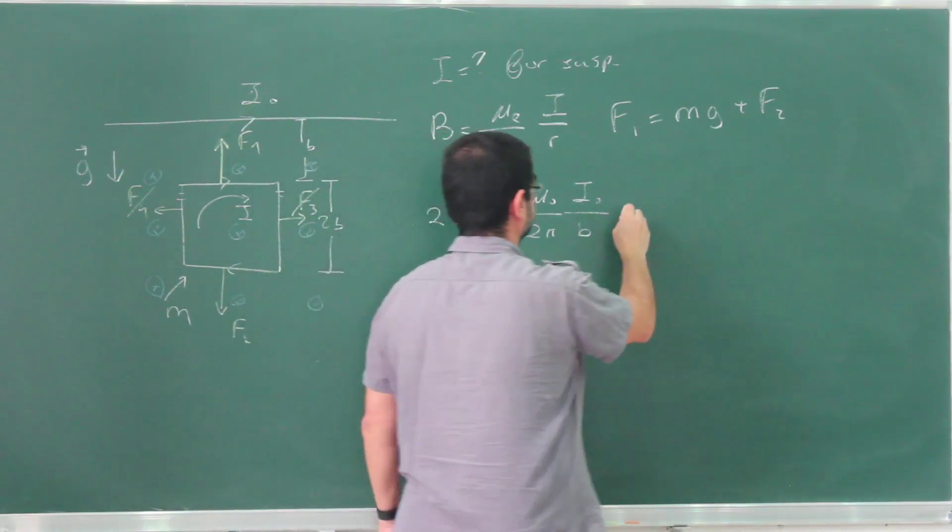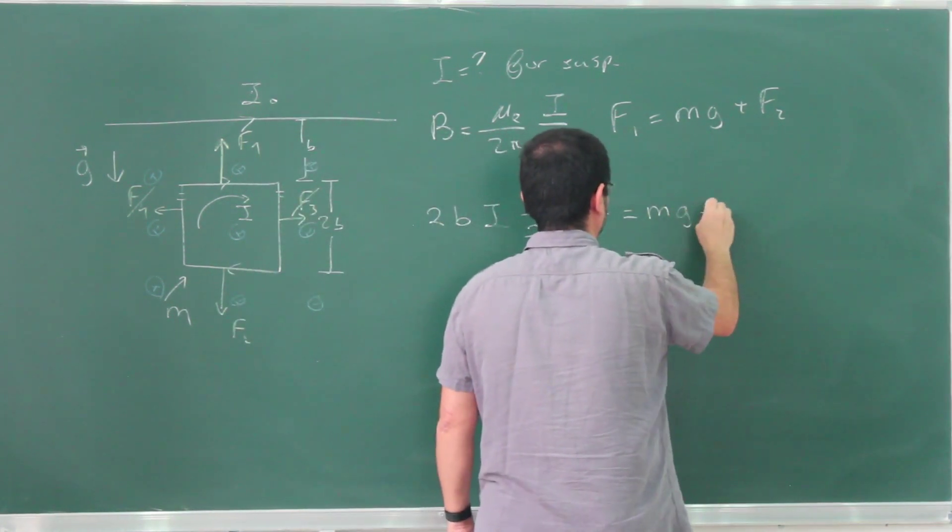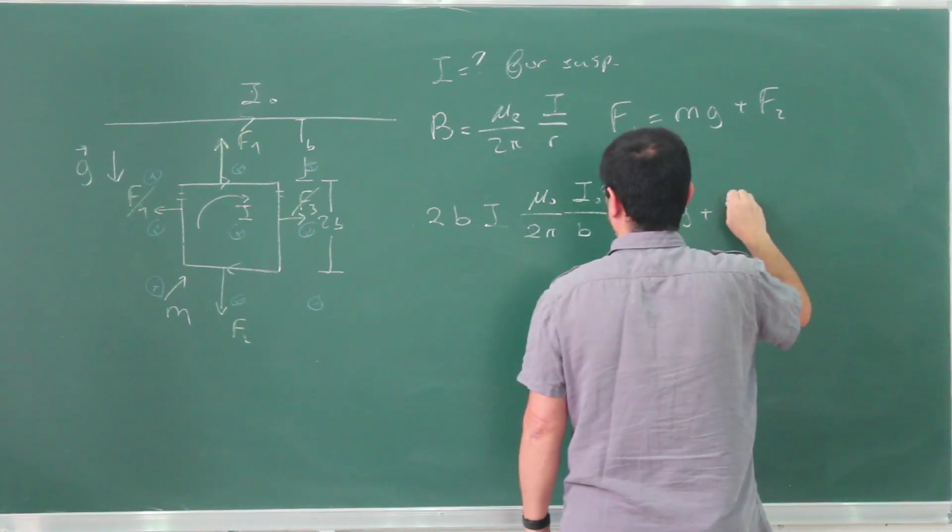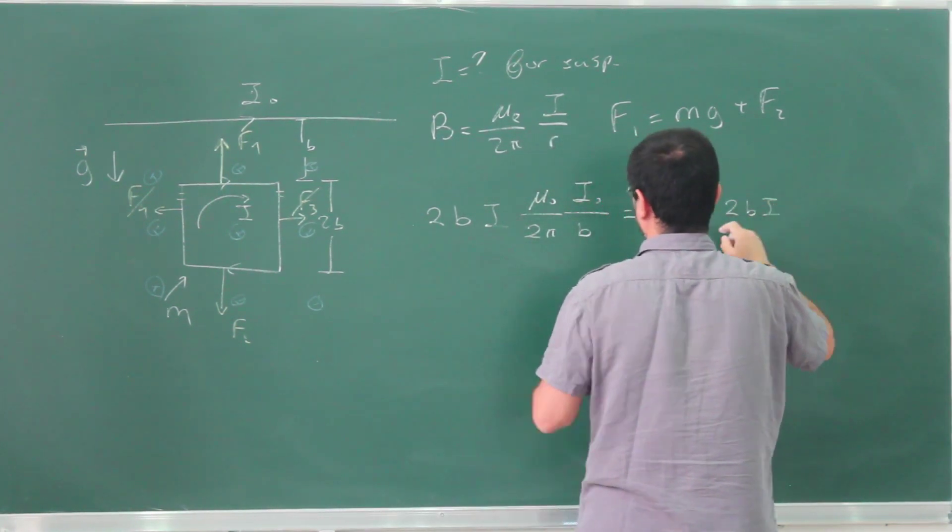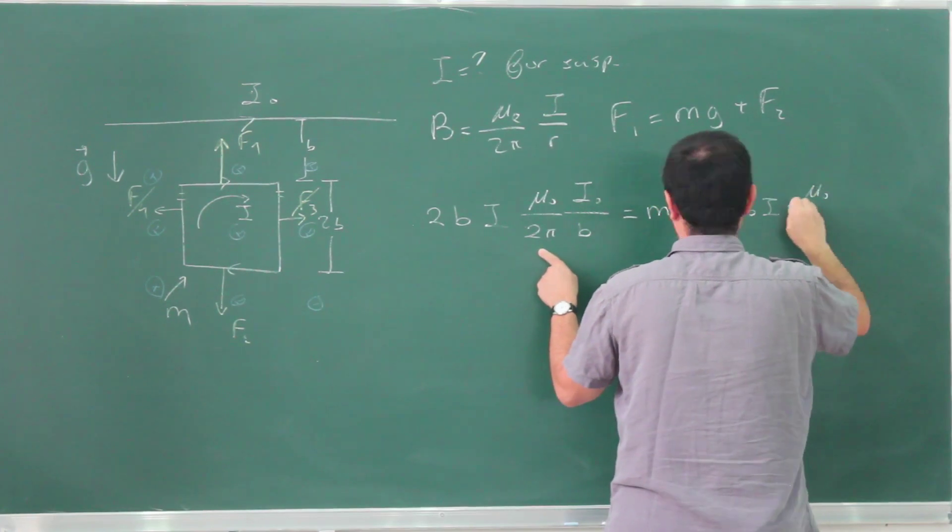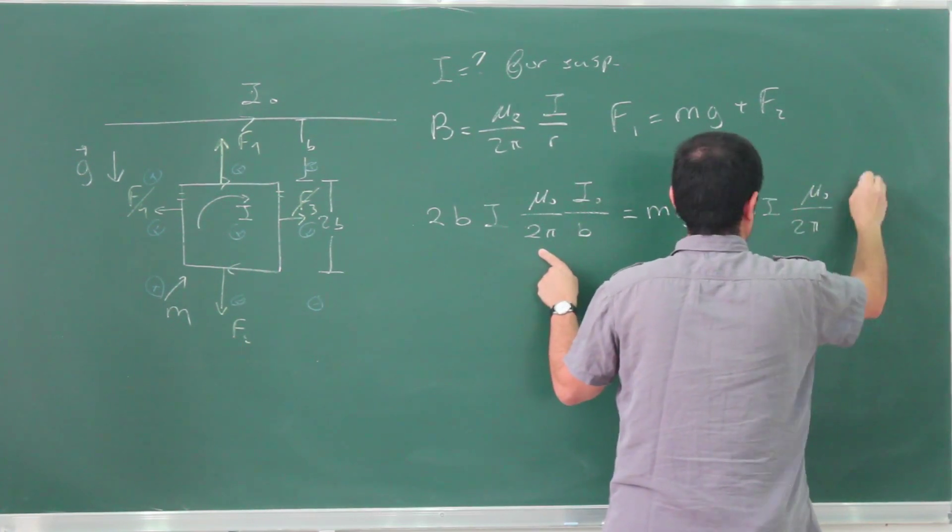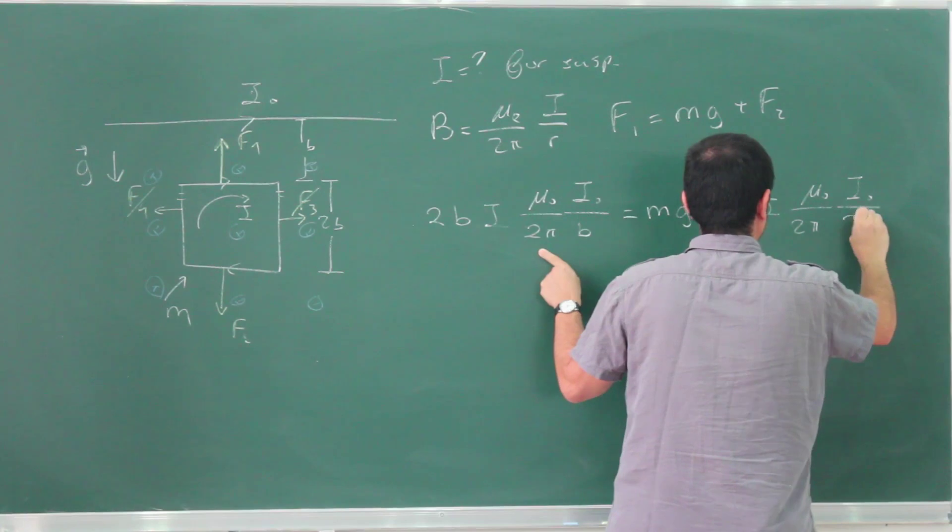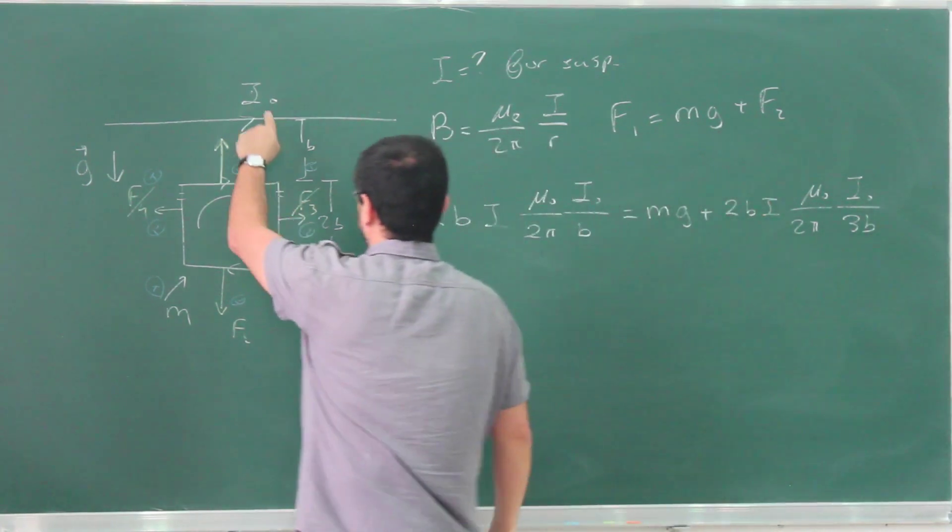And so this is equal to mg plus, it's the same thing, 2b times I, but now the magnetic field is different, μ₀ over 2π, I₀ over 3b. This is at a distance 3b away.